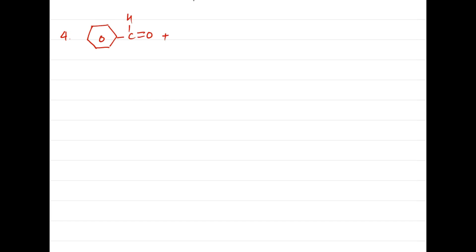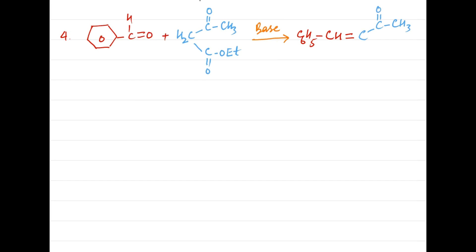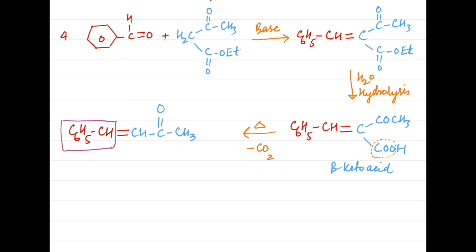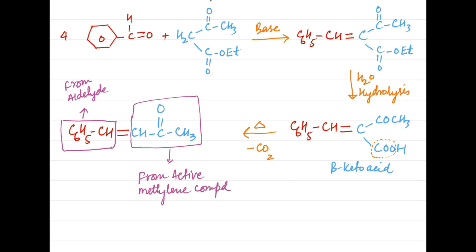In the case of the fourth example, benzaldehyde condenses with acetoacetic ester in the presence of base to form an alpha-beta unsaturated dicarbonyl compound. The hydrolysis in the next step changes only the ester group into a carboxylic acid; the keto group does not hydrolyze into an acid. The result is a beta-keto acid, which upon heating loses a carbon dioxide molecule to form an alpha-beta unsaturated ketone. This part comes from the aldehyde, whereas this part comes from the active methylene compound, acetoacetic ester in this case.